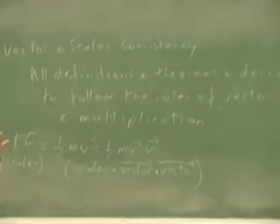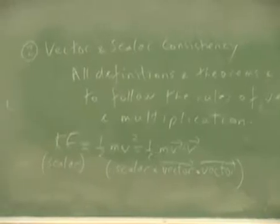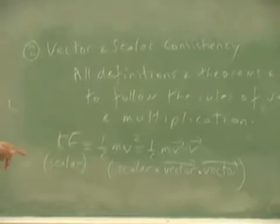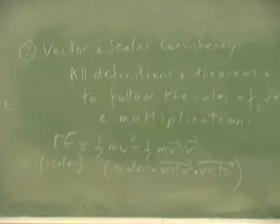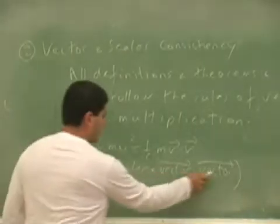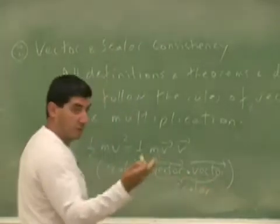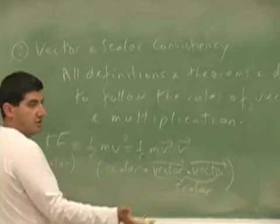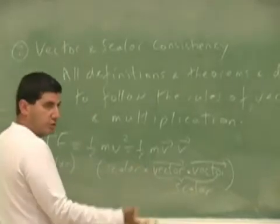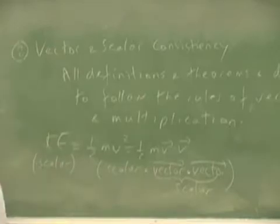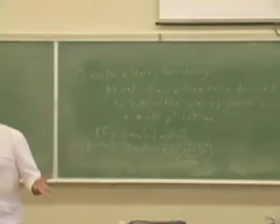Does that work out in terms of vectors? Vector dot product with a vector is a scalar, just a number. Scalar times a scalar is a number times a number, which gives a number. So you end up with a scalar. The kinetic energy definition works out.